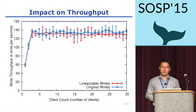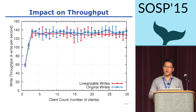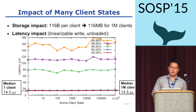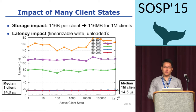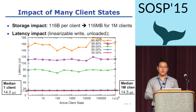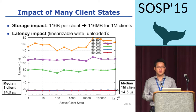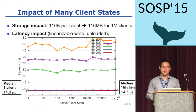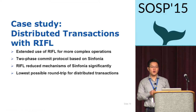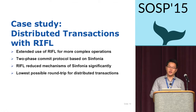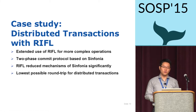This graph shows the write throughput of a single server. There was no statistically measurable impact on throughput. Riffle keeps track of RPC states for every active client, and the question of scalability impact of many client states can be raised. But thanks to efficient garbage collection, per-client state occupies only about 116 bytes of server main memory, which adds up to 116 megabytes for 1 million clients. We measured the latency impact of handling many client states using one physical client machine to simulate 1 million clients, and even 1 million client states didn't slow down the system significantly. We showed Riffle can make simple operations linearizable, and we wanted to see the case for more complex operations as well.